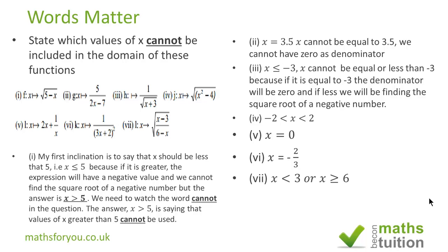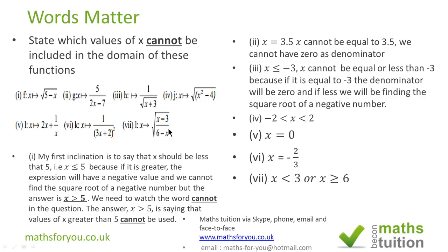x cannot be the square root of a negative number. And if x is greater than or equal to 6 — suppose x is 6 — 6 minus 6 is 0 and we cannot have 0 as the denominator. I hope all that makes sense and I look forward to hearing from you again. Bye bye now and keep in touch.